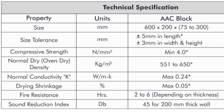Compressive strength is 4 newton per millimeter square. Normal dry density ranges from 551 to 650 kg per meter cube, which is three times lighter compared to red bricks. Normal thermal conductivity is maximum 0.24. Drying shrinkage percentage is maximum 0.05. Fire resistance is 2 to 6 hours depending on the thickness of the block, and sound resistance is 45 decibels for a 200 mm thick wall.